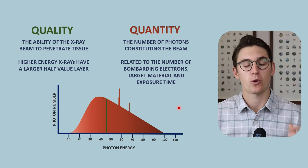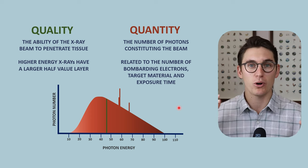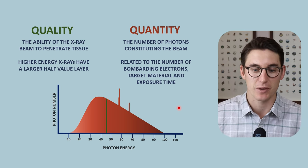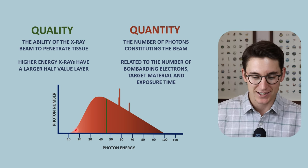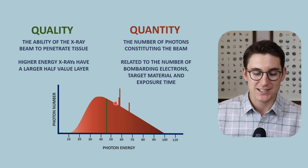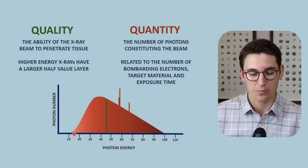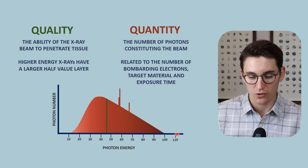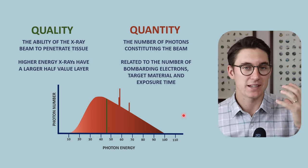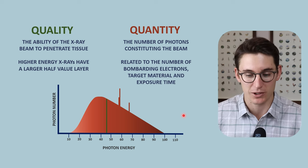When we refer to X-ray beam quantity, we are talking about the number of photons within the X-ray spectrum. It goes without saying that the number of photons here is the area under the curve. Our y-axis is our photon number. The area under this curve represents the X-ray beam quantity.